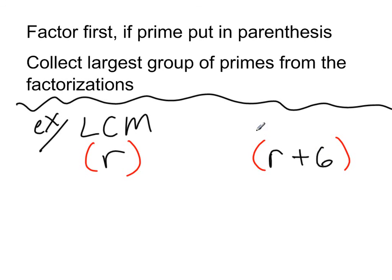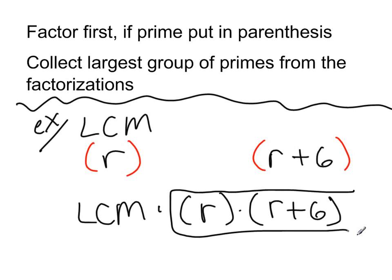So when I collect my largest group, I have an r here, and there's no single r by itself. This r is stuck with the plus 6. So for my least common multiple, I'm going to collect that r. And I'm going to multiply, and there's an r plus 6 here, no r plus 6 there. So I'll collect the r plus 6. And now that's my least common multiple between the two. So that makes students feel a little bit funky, because you're like, well, if it's prime, there's no LCM. That's not the case. If it's prime, we're going to end up just collecting it. And we always collect the largest group of primes from the factorizations.